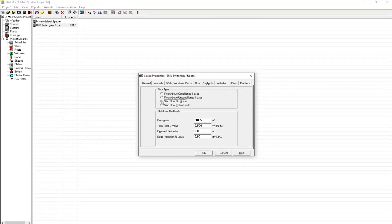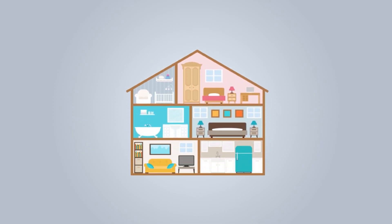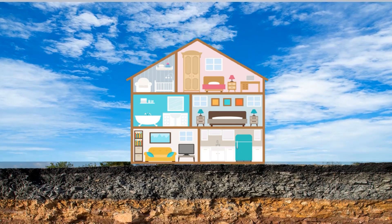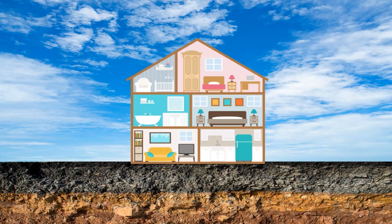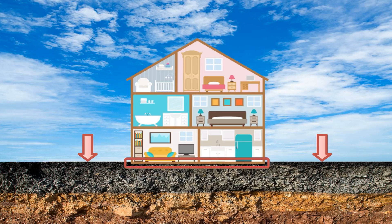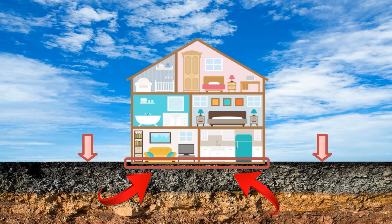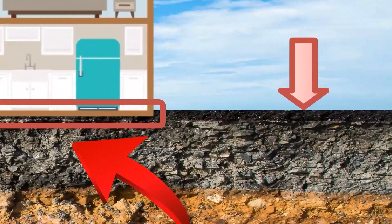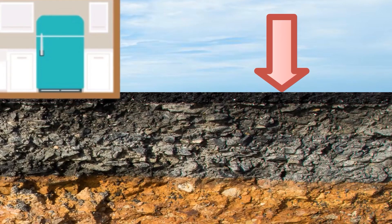Let us try to understand these two terms: slab floor on grade and slab floor below grade. This is the building on the ground floor, basically on the grade. The floor is on the grade, and the heat from the soil into the building will be very minimal. However, there is a chance of getting heat through the edges.